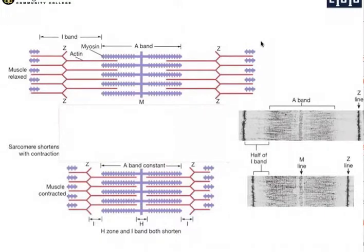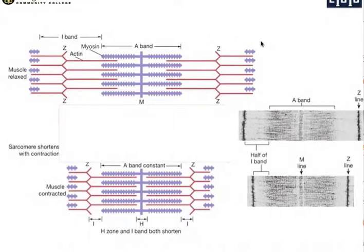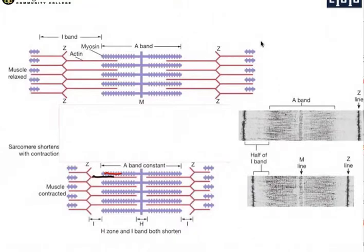This is a sarcomere. The sarcomere runs from Z-disc to Z-disc, and it consists of actin and myosin. The sarcomere shortens with contraction, but it's important to note that the myosin doesn't move — it actually brings the actin inwards. The myosin heads bring the actin in this way, bringing the Z-discs closer together.